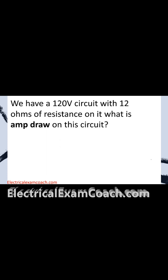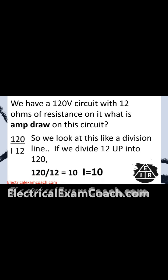In this case we have a 120-volt circuit with 12 ohms of resistance. What is the amp draw on this circuit? With formulas, we just plug in what we know: 120 volts and 12 ohms. We look at this like a division line — 120 divided by 12 equals 10. That tells us there should be 10 amps of current on this circuit, which we should be able to read and verify with our meter.